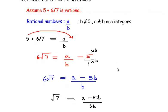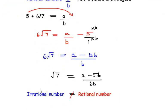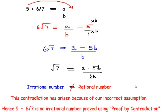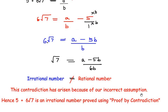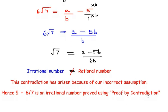That is by proof by contradiction. So we are going to write a statement over here. This contradiction has arisen because of our incorrect assumption which was 5 plus 6 root 7 is rational number. Hence 5 plus 6 root 7 is an irrational number which is proved using proof by contradiction. So we got an incorrect answer because of our incorrect assumption.